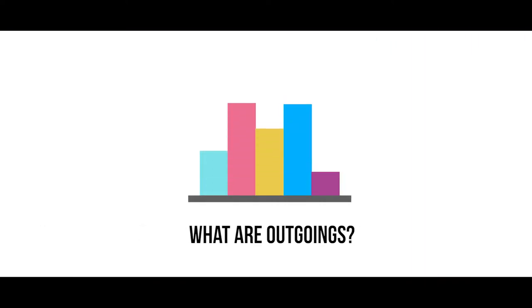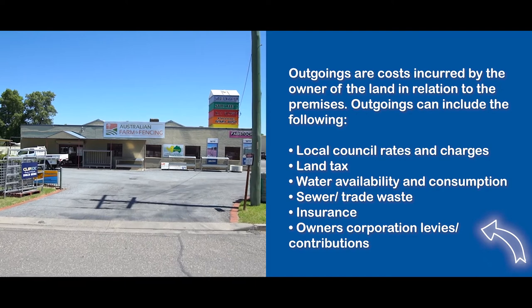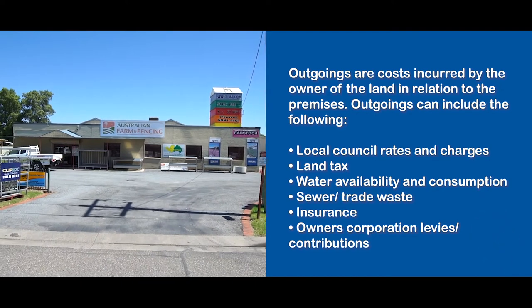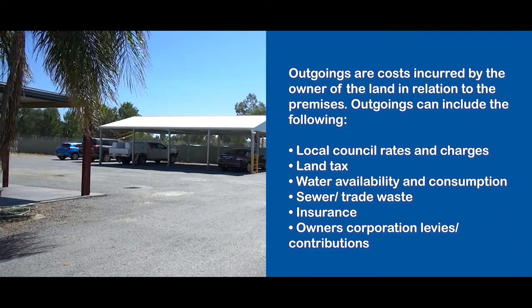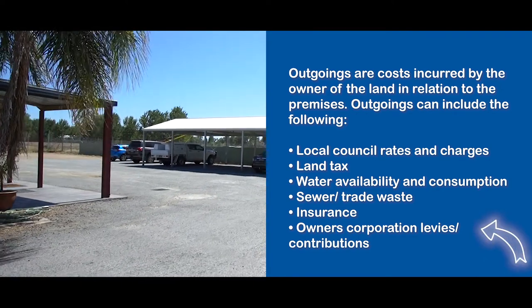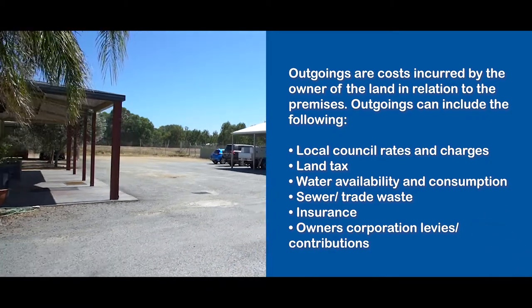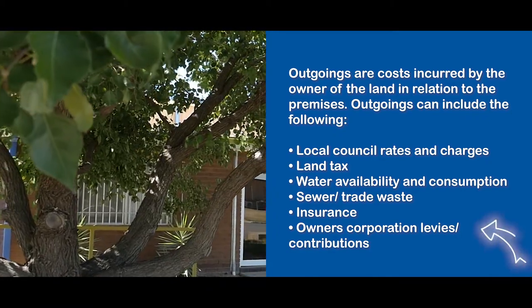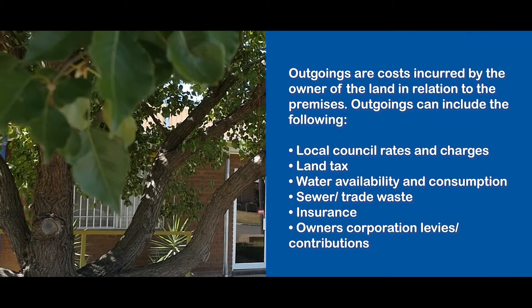What are outgoings? Outgoings are costs incurred by the owner of the land in relation to the premises. Outgoings can include the following: local council rates and charges, land tax, water availability and consumption, sewer and trade waste, insurance, and owner's corporation levies and contributions.